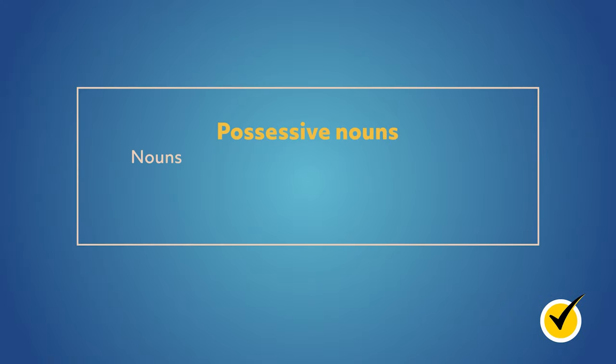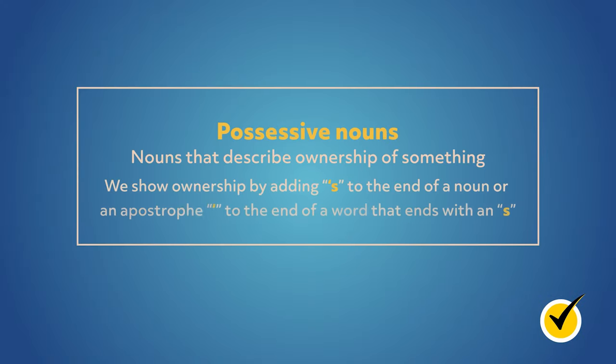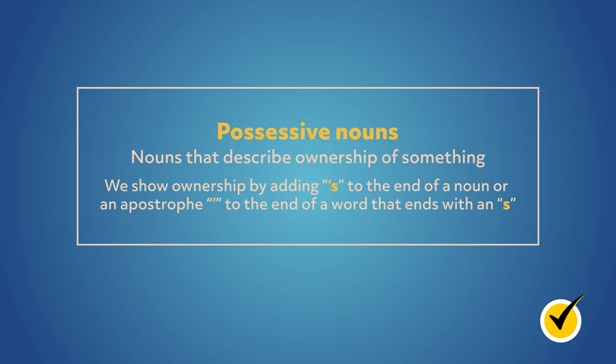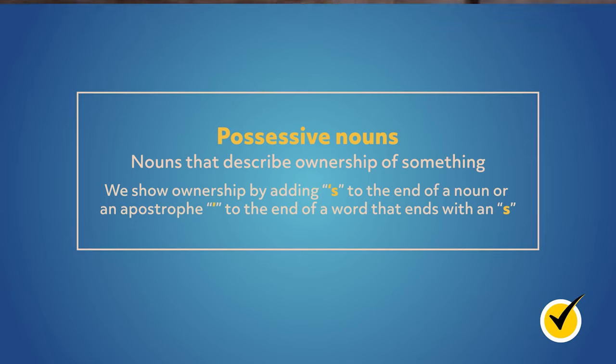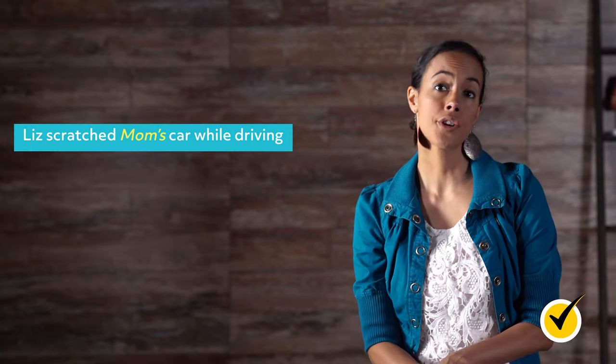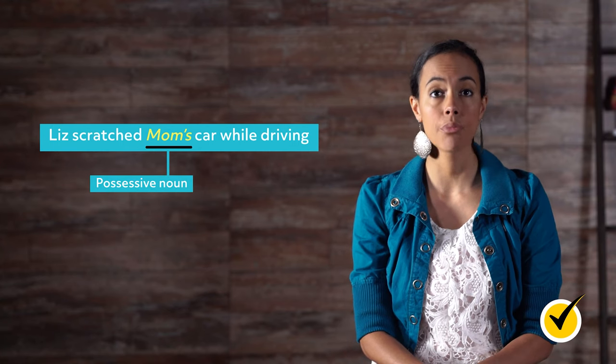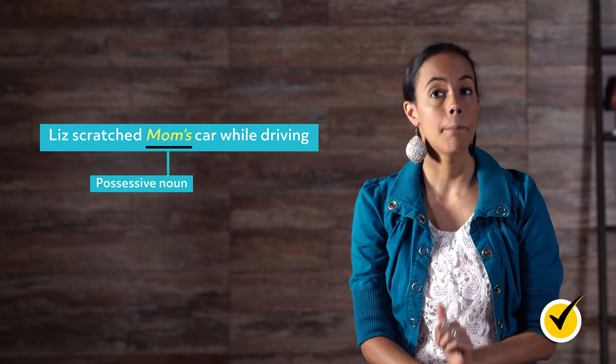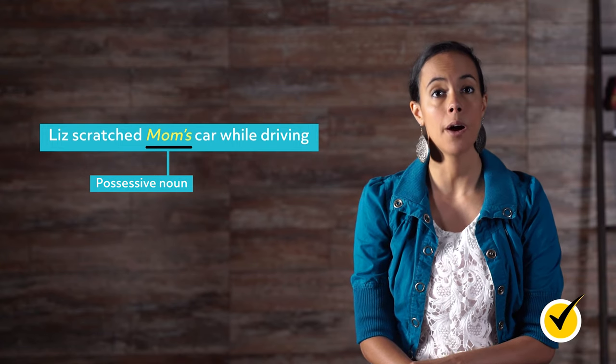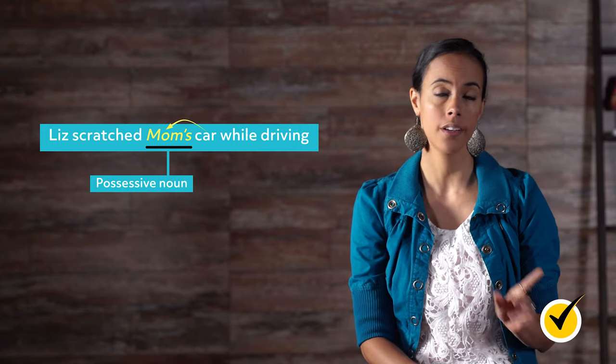Possessive nouns are nouns that describe ownership of something. We show ownership by adding apostrophe S to the end of a noun, or an apostrophe to the end of a word that ends with S. One way to determine which noun is possessive is to identify the object and ask, to whom or what does this belong? Here's an example: Liz scratched mom's car while driving. Mom's is the possessive noun because the car belongs to her, not Liz.